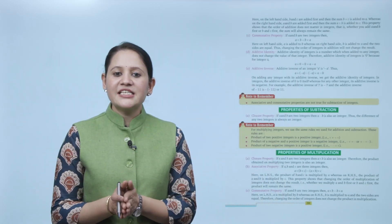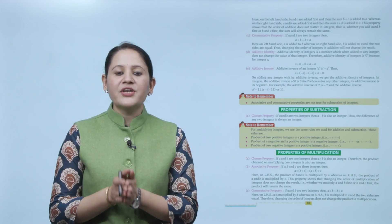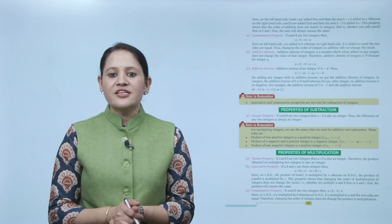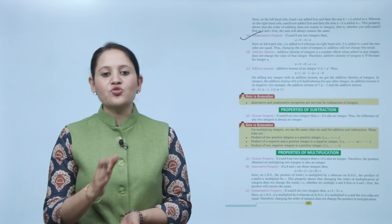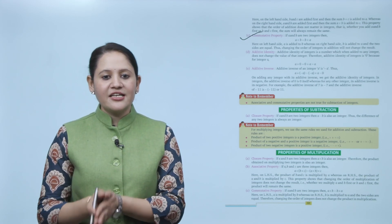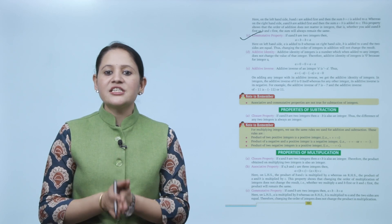On the left-hand side, b and c are added first, then the sum b plus c is added to a. On the right-hand side, a and b are added first, then the sum a plus b is added to c. This property shows that the order of addition does not matter in integers — whether you add a and b first or b and c first, the sum will always remain the same. Next is the commutative property: if a and b are two integers, then a plus b equals b plus a. Changing the order of integers in addition will not change the result.